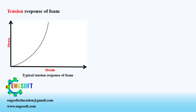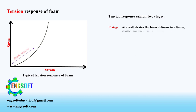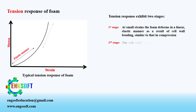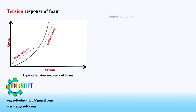There are two stages during tension. At small strains, the foam deforms in a linear elastic manner as a result of cell wall bending, similar to that in compression. The cell walls then rotate and align, resulting in rising stiffness until fracture occurs.